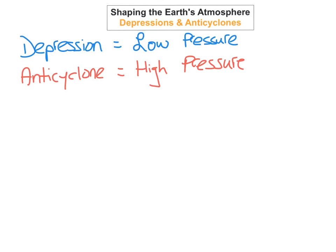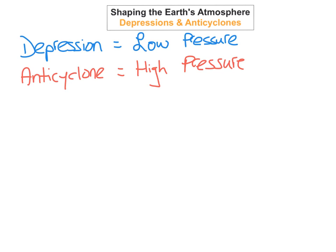So an anticyclone is high pressure and a depression is low pressure. What we have here is a depression on the left hand side — it's an area of low pressure — and on the right hand side there's an anticyclone and it's an area of high pressure.